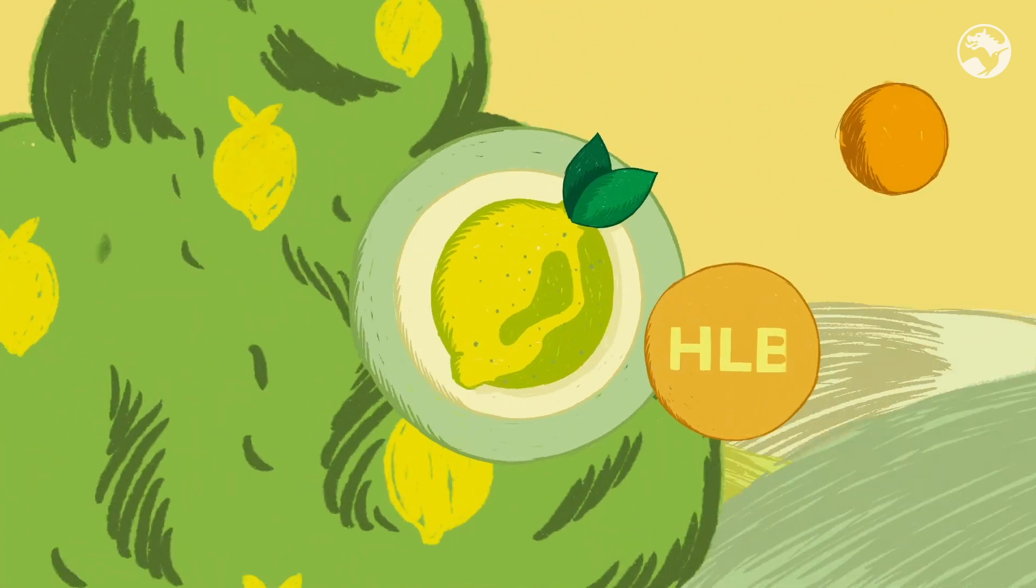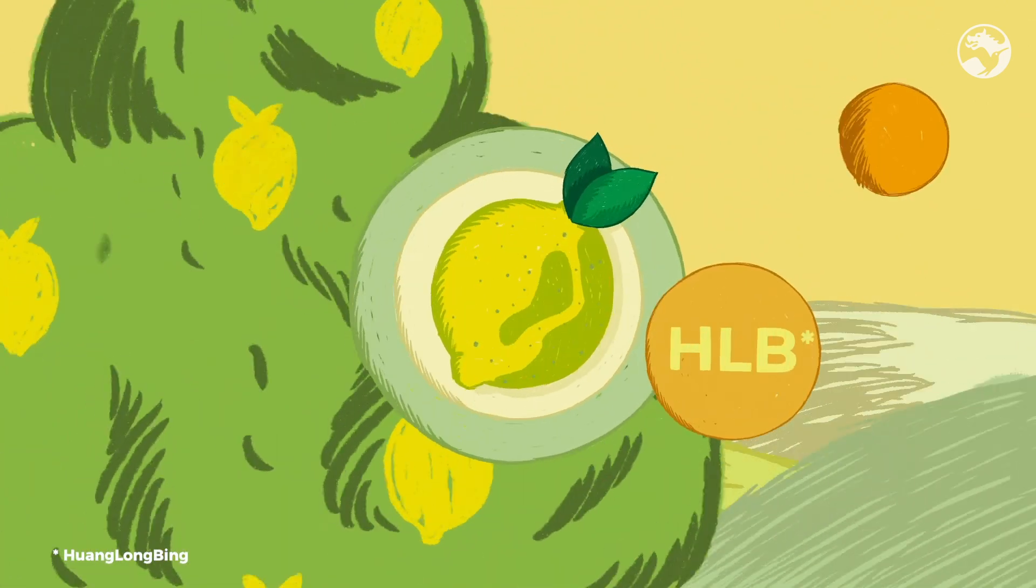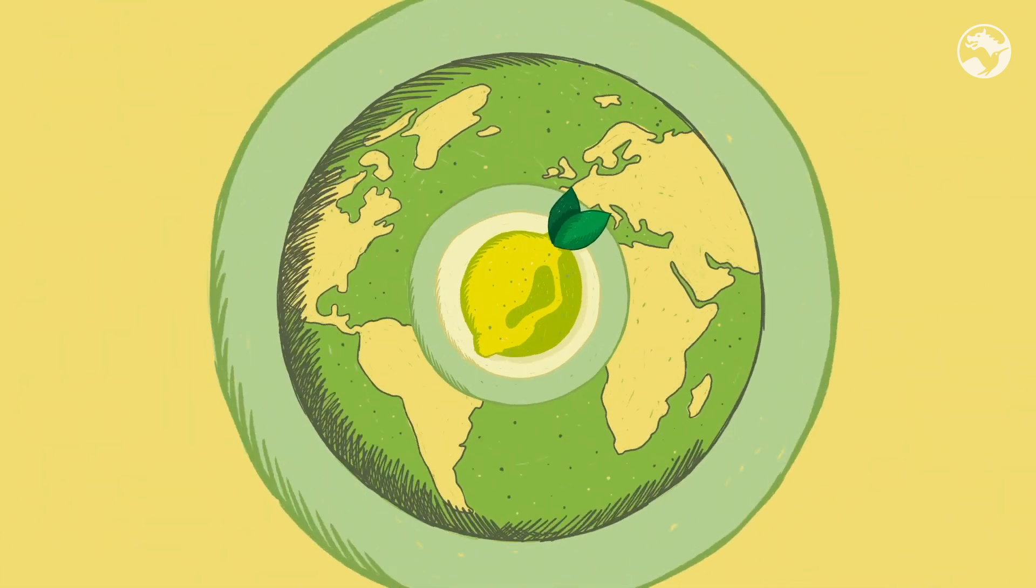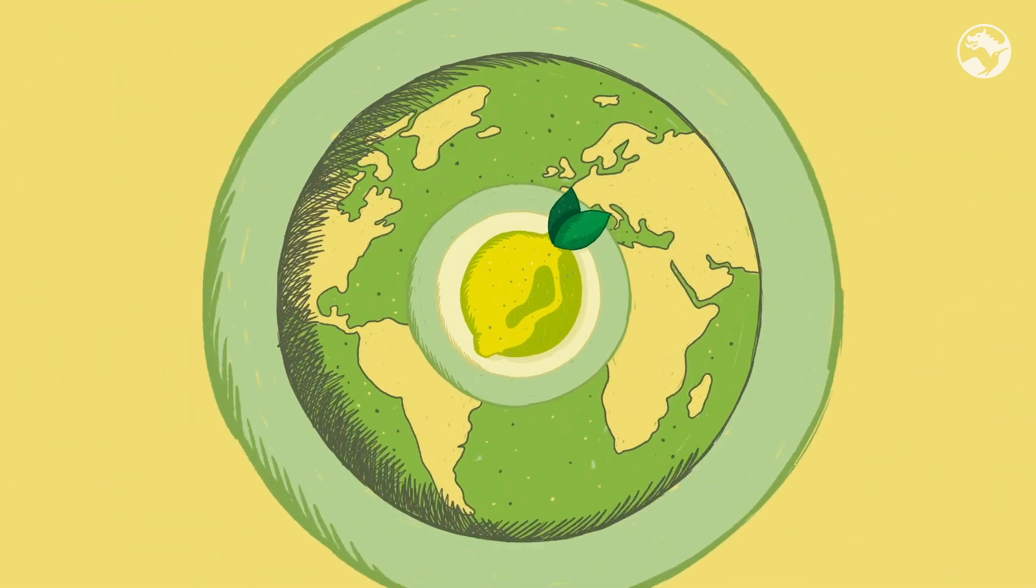Citrus greening, or HLB, is a bacterial disease which has a devastating impact on the citrus industry, significantly harming farming communities and processes around the world.